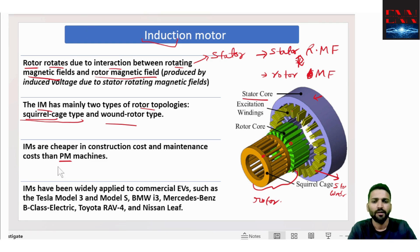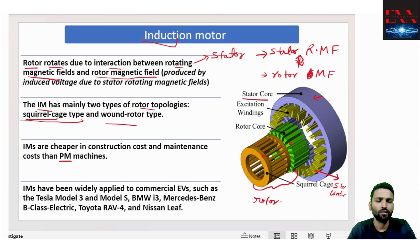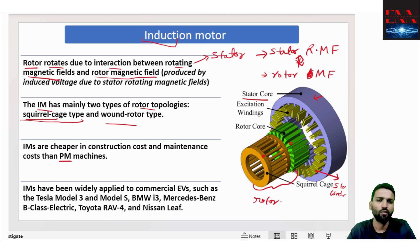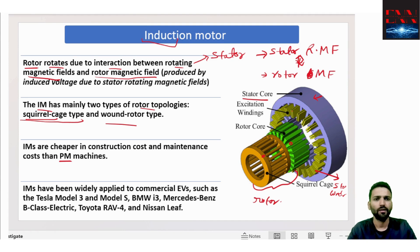Why induction motors are used: their construction cost is less and maintenance is also less compared to PM (permanent magnet) machines. Induction machines have been widely applied to commercial EVs such as Tesla Model 3, Model S, and BMW i3. Currently most cars are switching to PM synchronous motors, but there is a trend coming back toward PM-less motors. The contenders are induction motor and switched reluctance motor — both are magnet-free and good in performance.